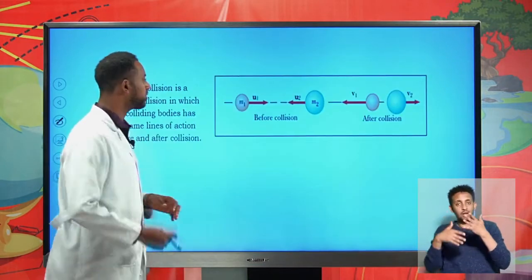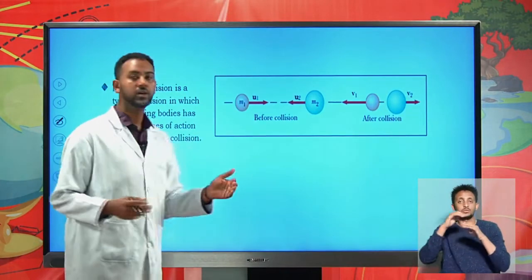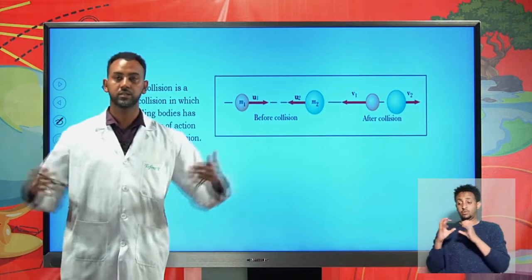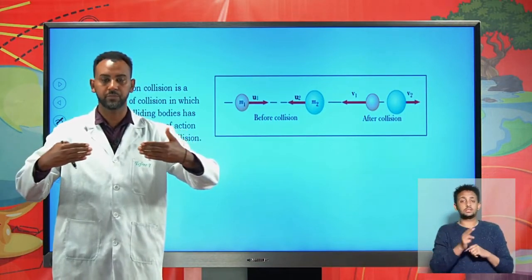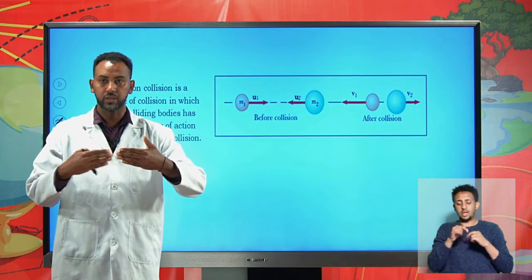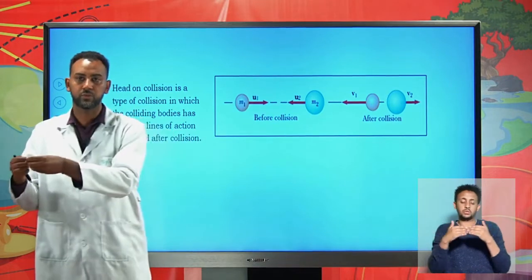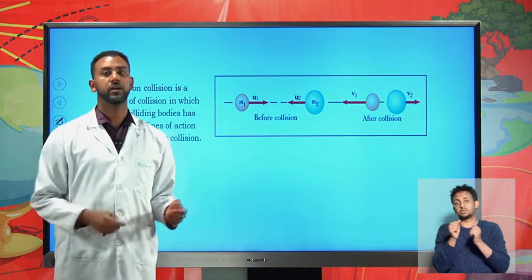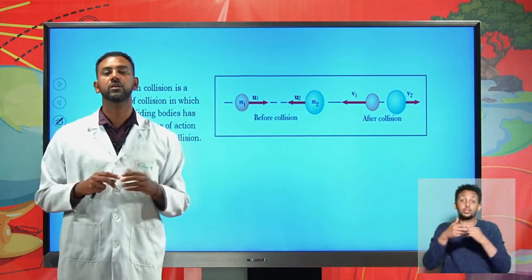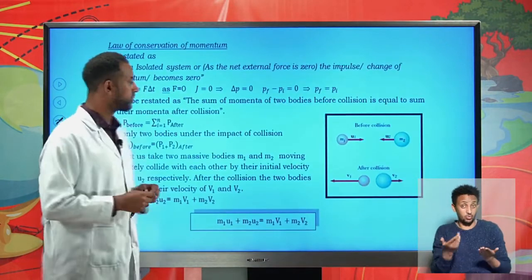The other and most common type of collision is head-on collision. Head-on collision is a collision in which the lines of action remain constant before and after collision. Suppose two objects are moving with different speeds in opposite directions and collide together. After the collision, these objects might move along the same line of action — they might move oppositely, or stick together and move in one direction. If the lines of action remain the same before and after collision, such a collision is known as head-on collision.